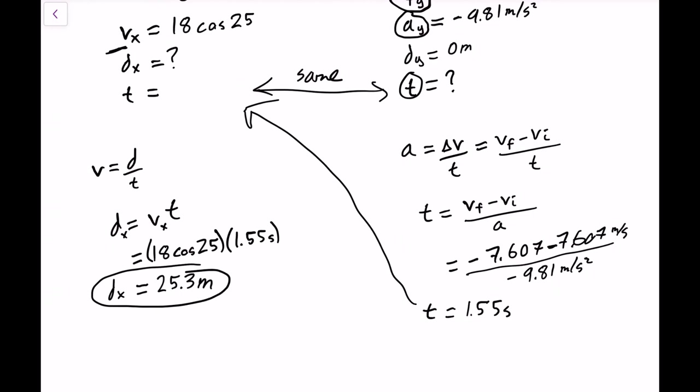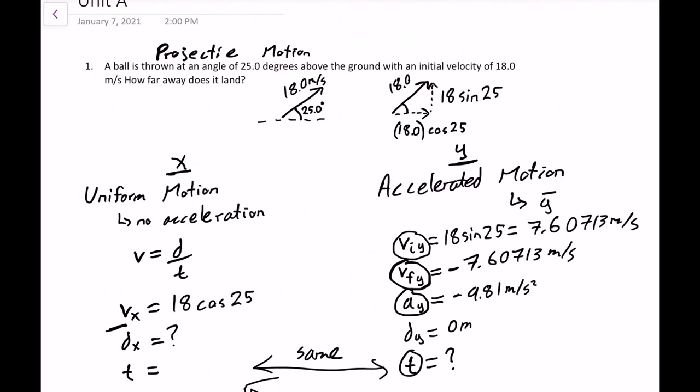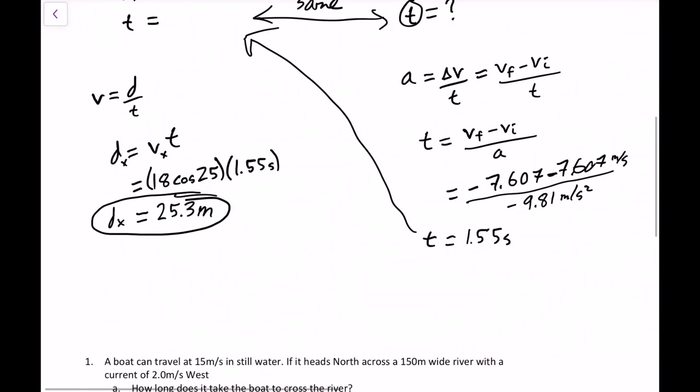And that would be our final answer there. So remember, any time you're doing a projectile motion question, you will almost always be breaking it into the two components, into X and Y. And generally, you'll use the Y to figure out the amount of time that something is in the air, and then you'll use the X direction to figure out how far something has gone. Sometimes you would go backwards where you'd use the X to find the time and you'd use Y to find the answer. It just depends on what the question is asking you.